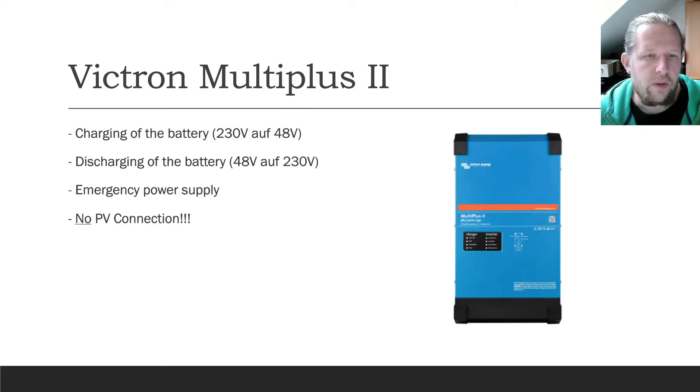An additional essential thing of this system is the Victron MultiPlus 2. It has multiple functions. It can charge the battery from 230V to 48V. Also it can discharge the battery from 48V to 230V. It brings the functionality for the emergency power supply. It can make a grid for us even when the public grid is not available. But an important thing is that it does not have any photovoltaic connection. So we have other alternatives that I will show you next.